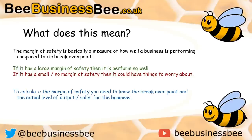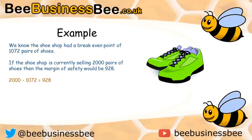On the other hand, if a business has a small margin of safety or even no margin of safety, then small changes could cause that organisation a problem. To calculate the margin of safety you need the breakeven point and the actual level of output or sales. For the shoe shop, with a breakeven point of 1,072 pairs of shoes, if the shop is currently selling 2,000 pairs, the margin of safety would be 928 — that's 2,000 minus 1,072.